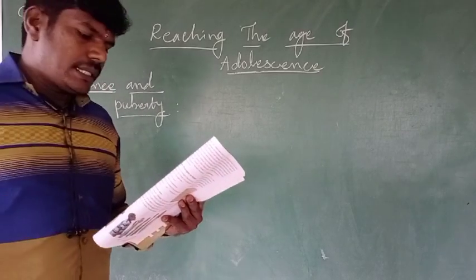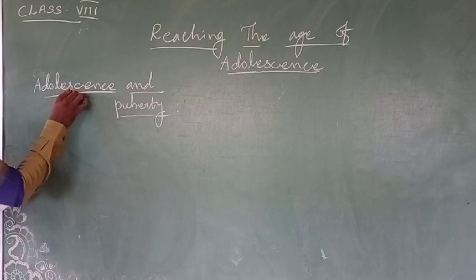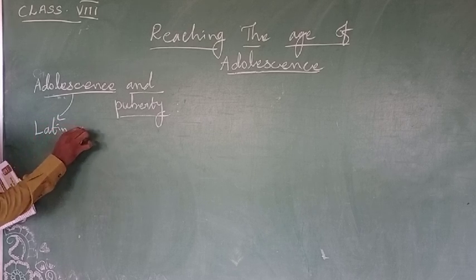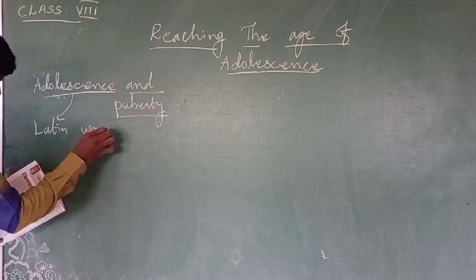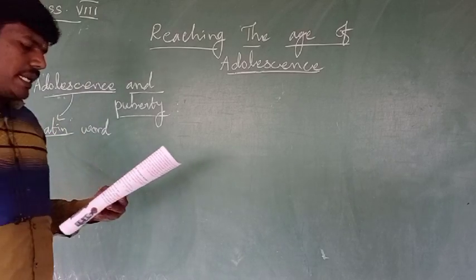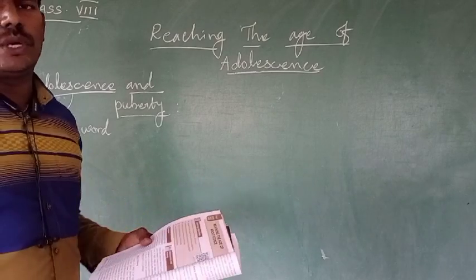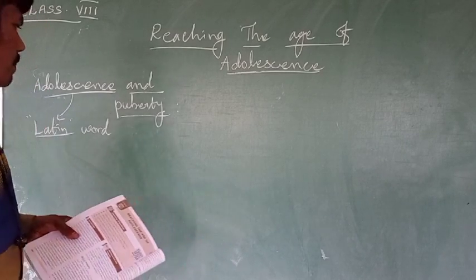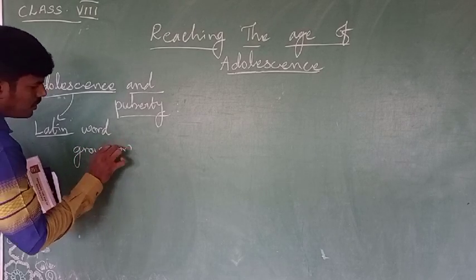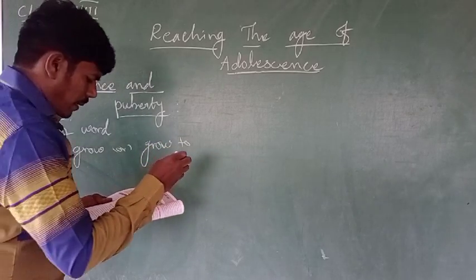The word 'adolescence' is derived from the Latin word 'adolescere,' meaning 'to grow' or 'grow to maturity.'